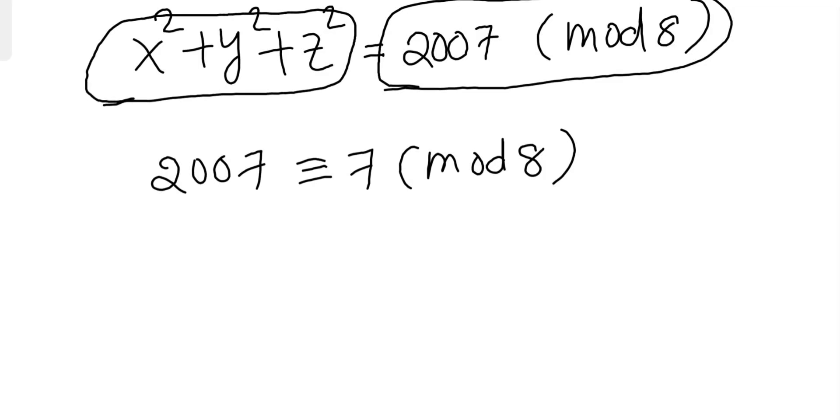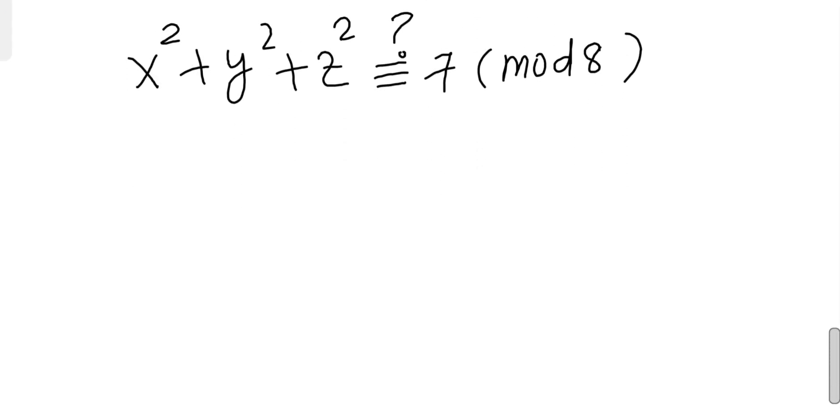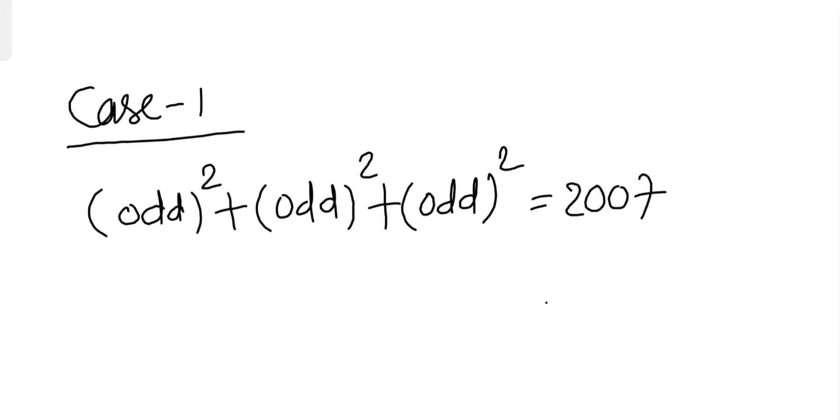So let's check whether x² + y² + z² equals 7 mod 8. If you know some elementary congruence rules, any odd number square is 1 mod 8 always. But any even number, when we take even number square mod 8, it gives us either 0 or 4 as the remainder.